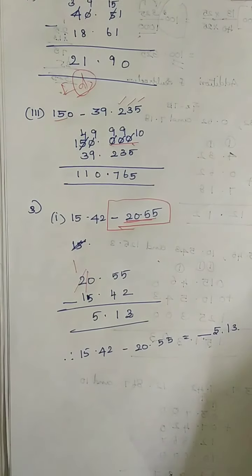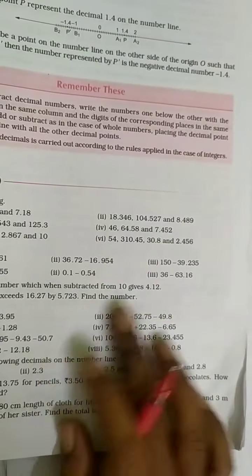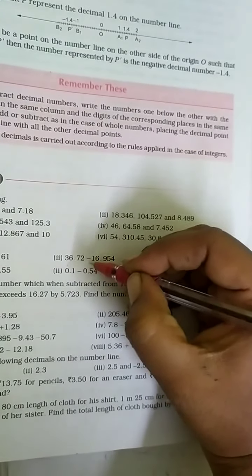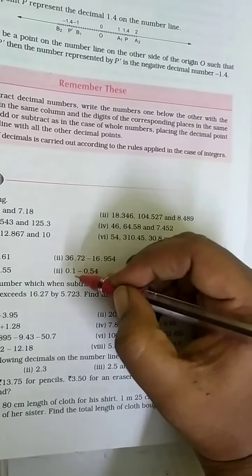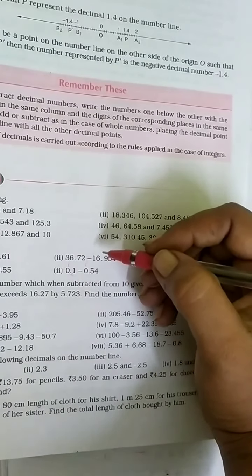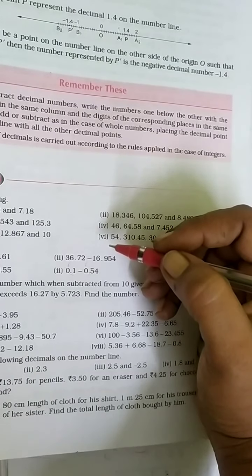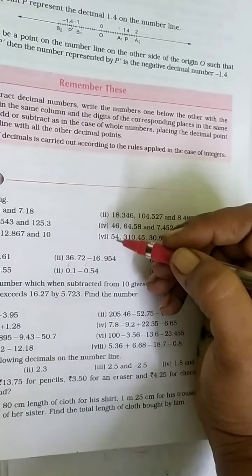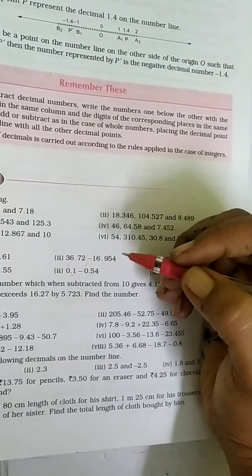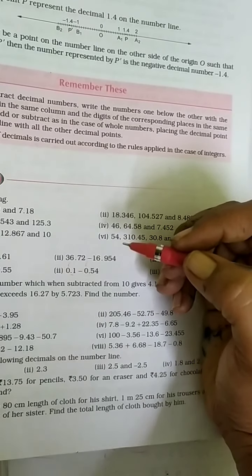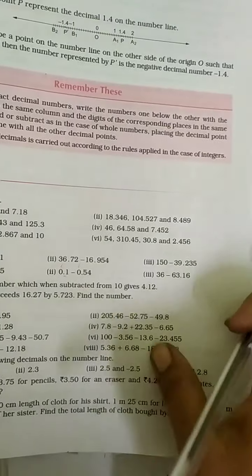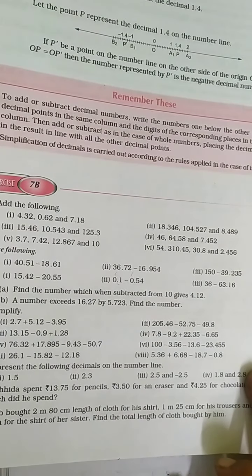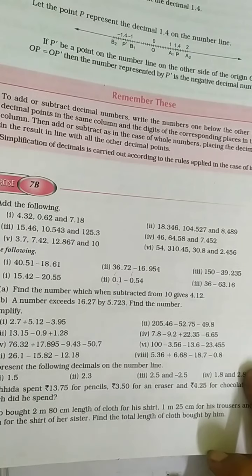The same model you follow for the next two subdivisions. For 0.1 minus 0.54: the integral part is the same. Looking at the decimal part, 5 is bigger than 1, so 0.54 is the bigger number. You do 0.54 minus 0.1 and subtract normally. After subtracting, in the answer you use a negative symbol. It is an easy problem. The leftover problems in problems 1, 2, and 3 you do as homework.